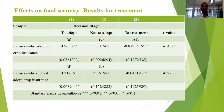Similarly, those who did not insure — if they had insured — their food insecurity index would have declined by 0.045, meaning that overall crop insurance has the advantage of reducing household food insecurity, making farmers more food secure.